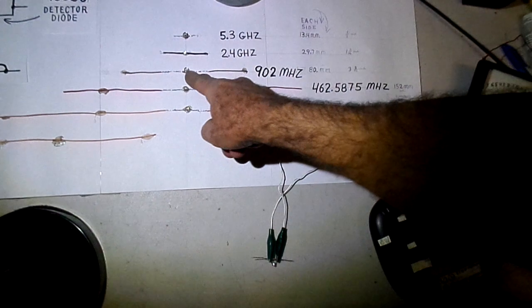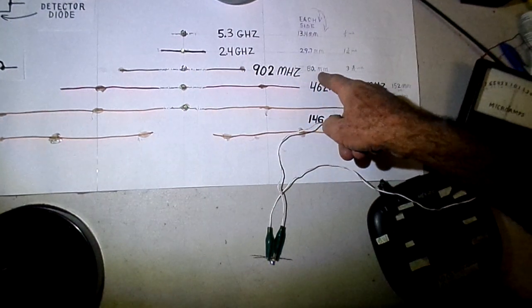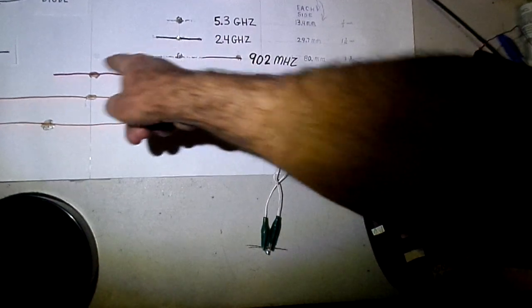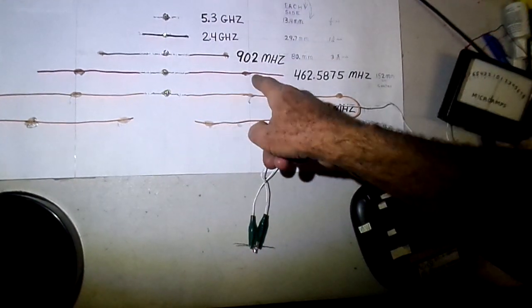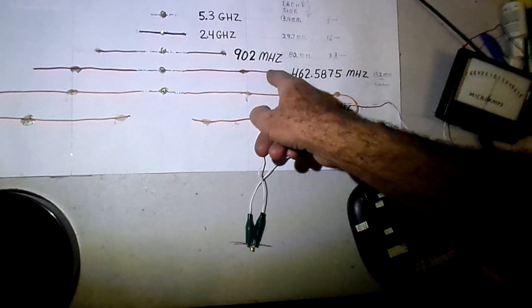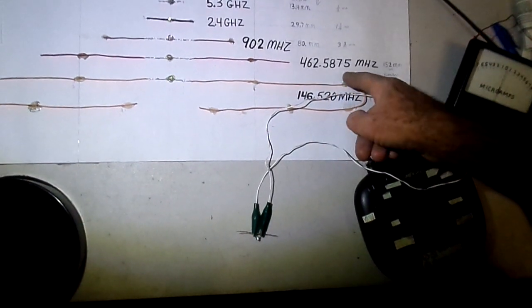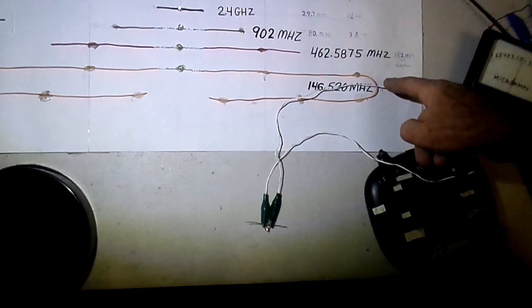On this one here, that's 902 megahertz. I got about 80 millimeters from the center to the side on each side again. And this one here was about 6 inches or 152 millimeters. This one was resonant at 462 megahertz or 462.5875.